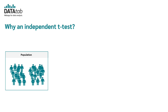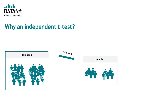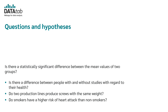But what do we need the independent t-test for? Let's say we want to check if there is a difference between two groups in the population — for example, if there is a difference in salary between men and women. Of course, it is not possible to ask all men and women for their salary, so we take a sample. We need the independent t-test to make a statement about the population based on that sample. The key question is: is there a statistically significant difference between the mean values of two groups?